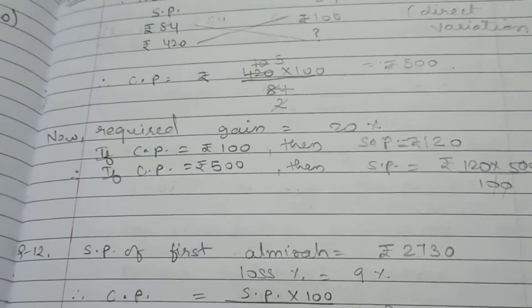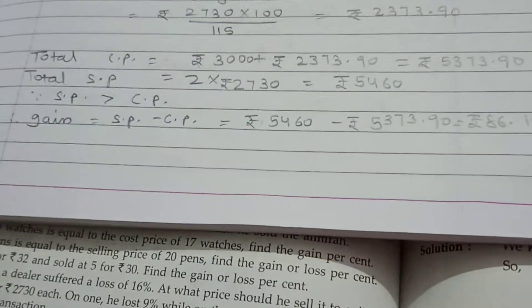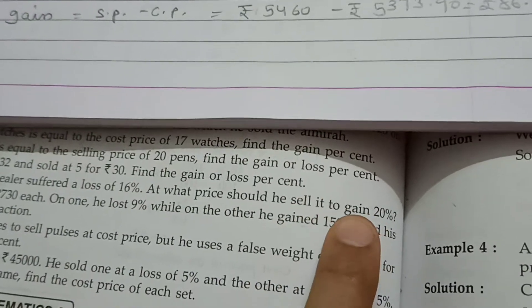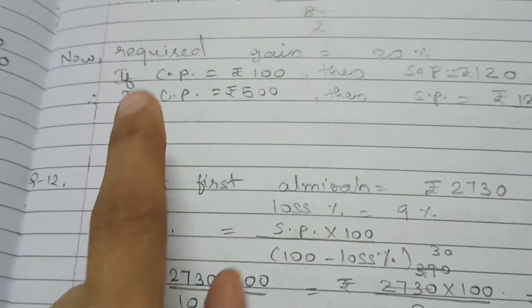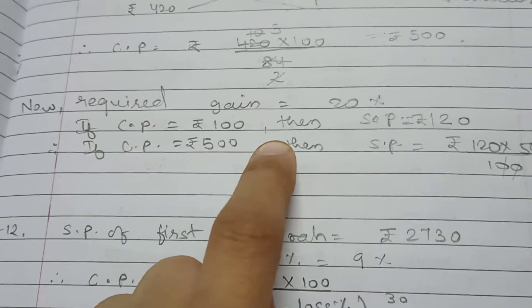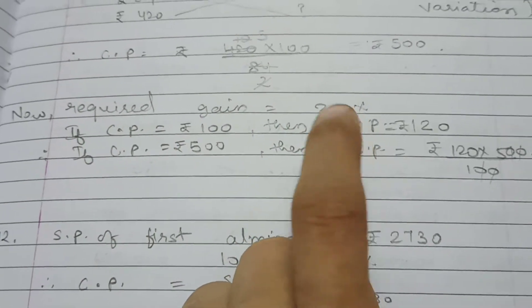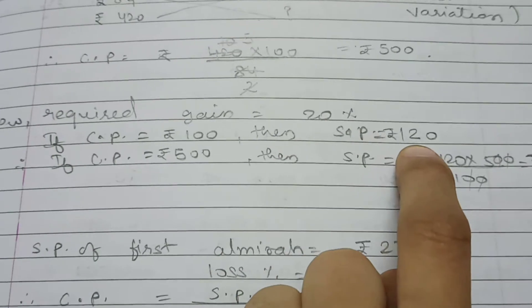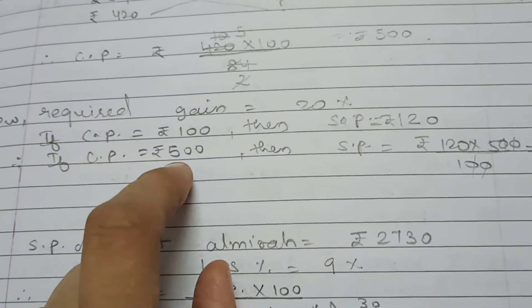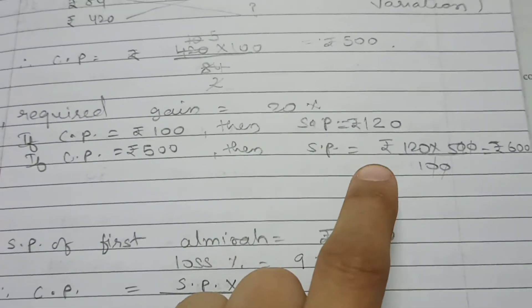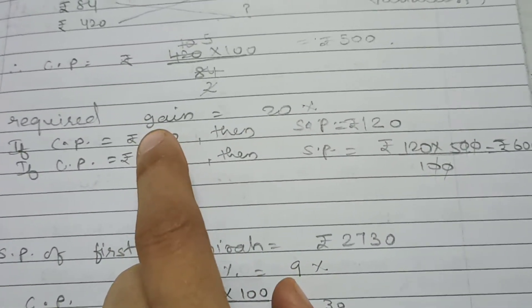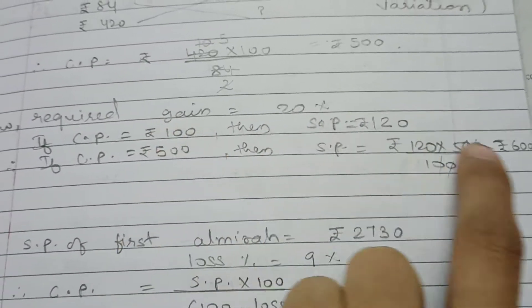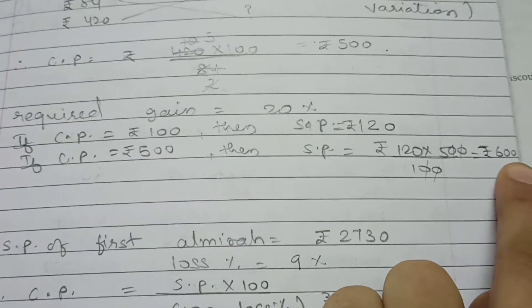Now, we know we want gain of 20%. So, we need to find SP again. For that gain, if CP is 100 rupees, then SP is 120 with 20% gain. If CP is 500 rupees, then SP is equal to 120 multiplied by 500 divided by 100, which equals Rs. 600.